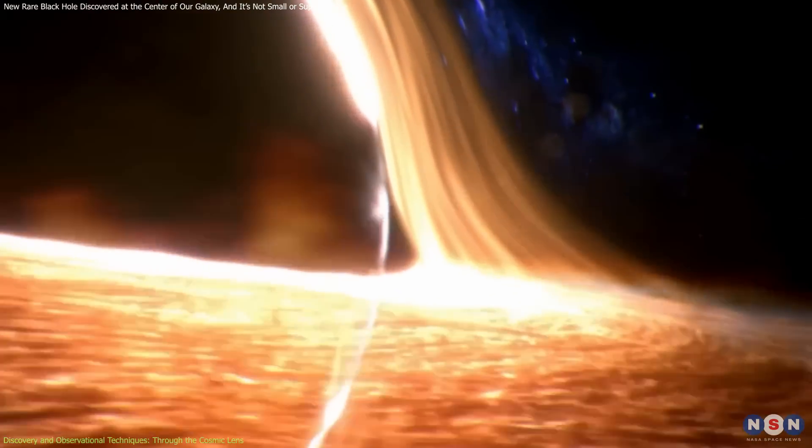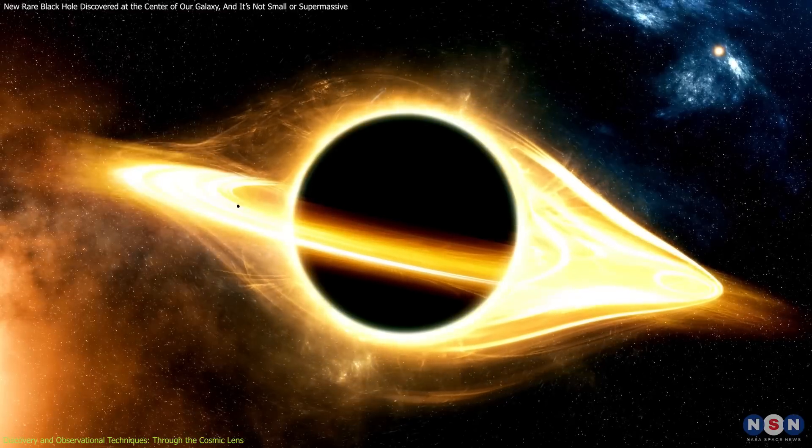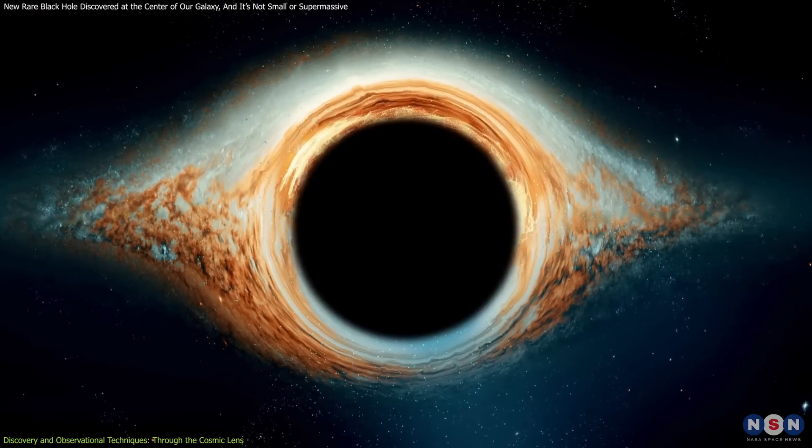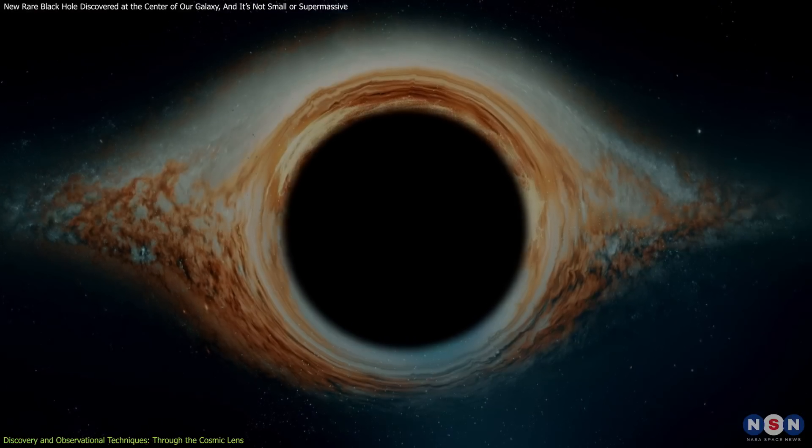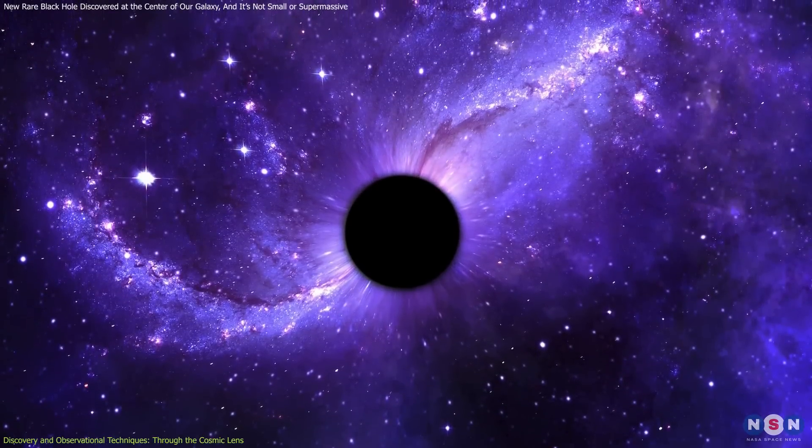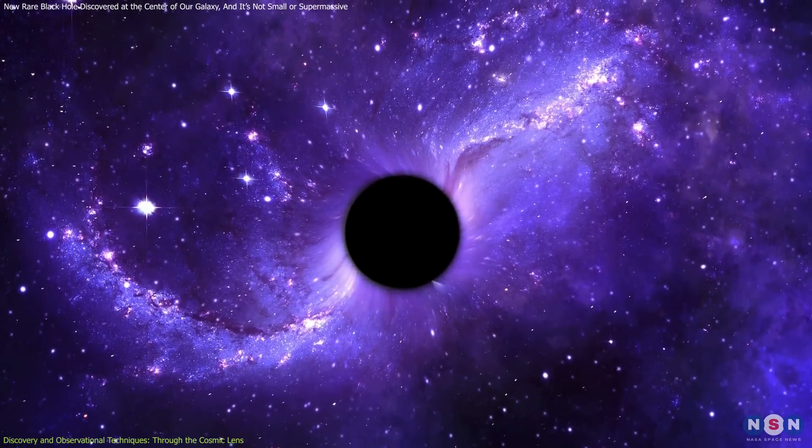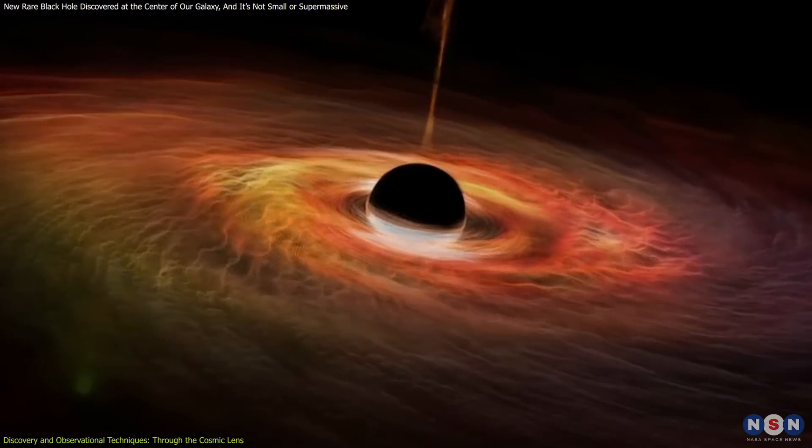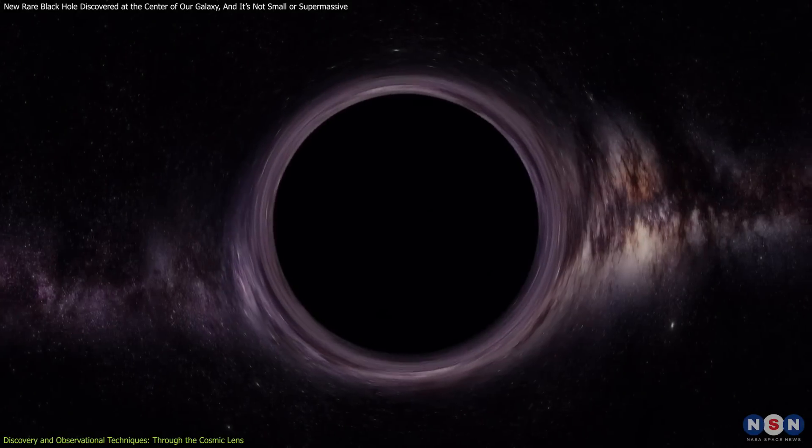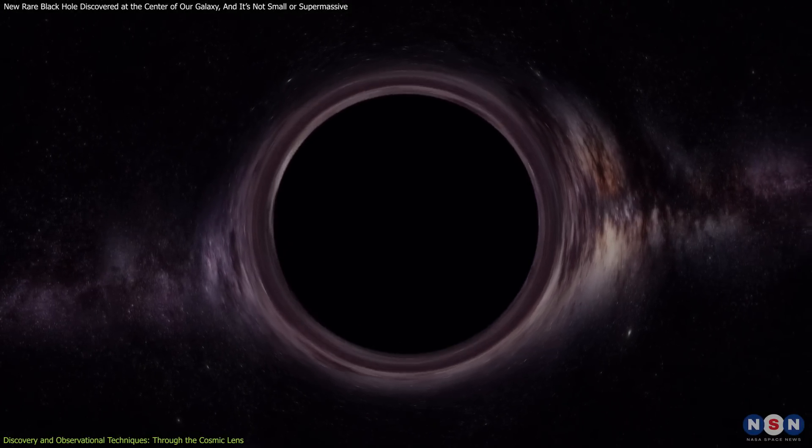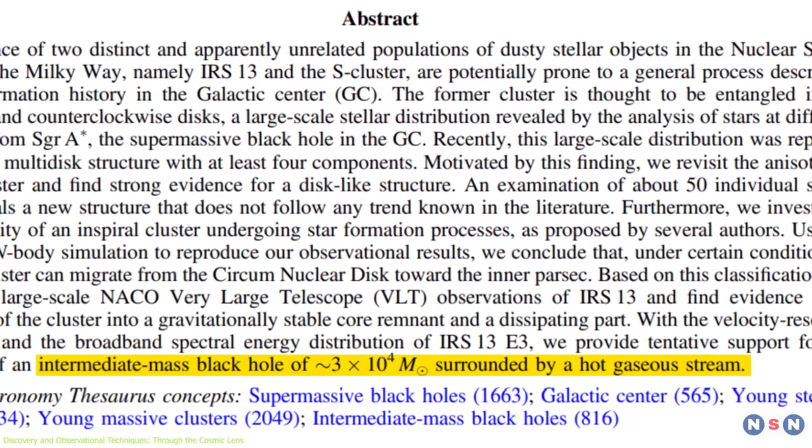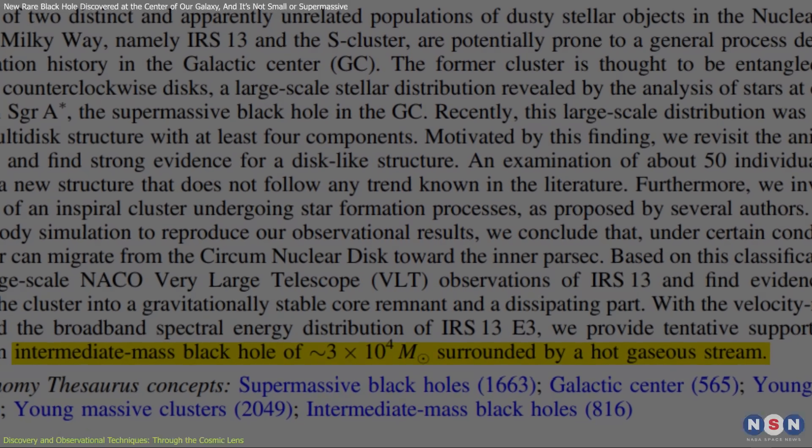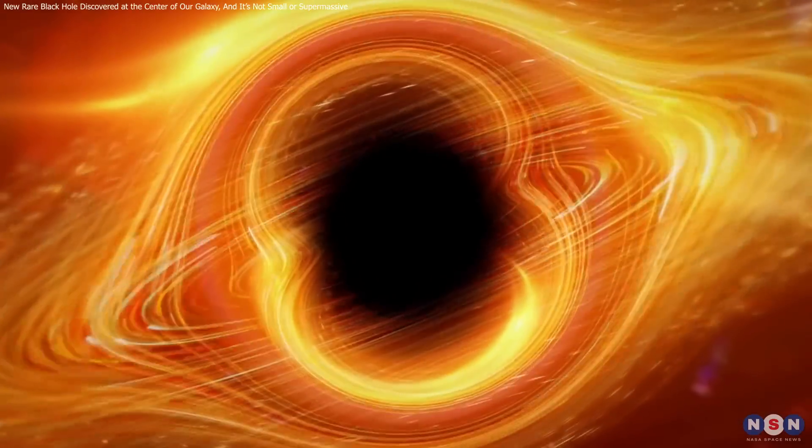However, the nature of this black hole was unusual. The data suggested it was too massive to be a typical stellar mass black hole, yet not massive enough to qualify as a supermassive black hole. This placed it squarely within the rare category of intermediate-mass black holes, often considered the Rosetta Stones of their kind. These entities are crucial for understanding how smaller black holes might grow into the colossal ones that dominate galaxy centers. Astronomers estimated the mass of this enigmatic black hole to be tens of thousands of times that of the sun.